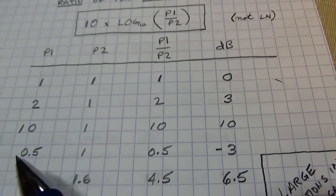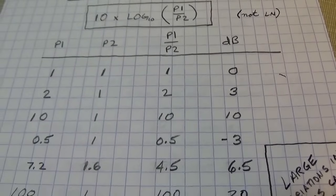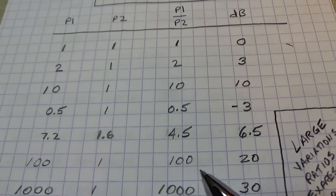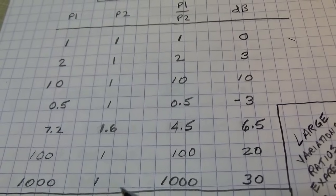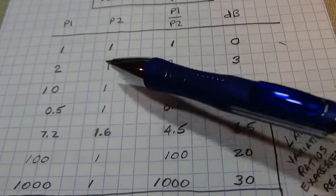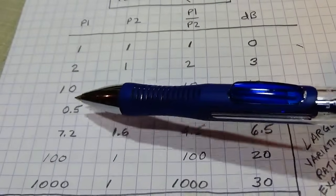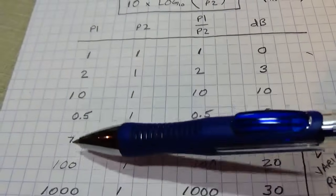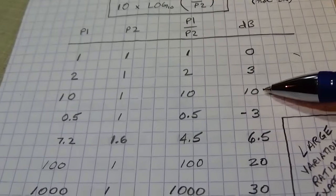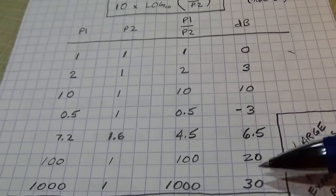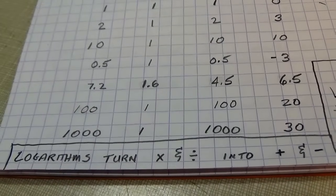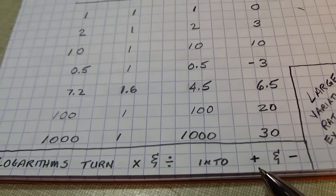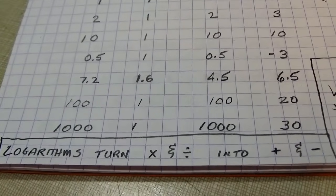Other examples: 100 times is 20 dB, 1000 times is 30 dB. From 10 to 100 to 1000 we multiply by ten each step, but the dB values increase linearly — 10, 20, 30. Logarithms turn multiplication and division into addition and subtraction, which is part of why we use them — a useful property even before calculators existed.